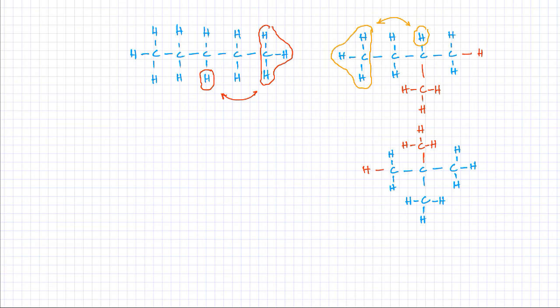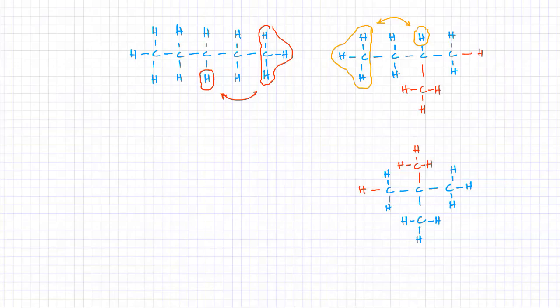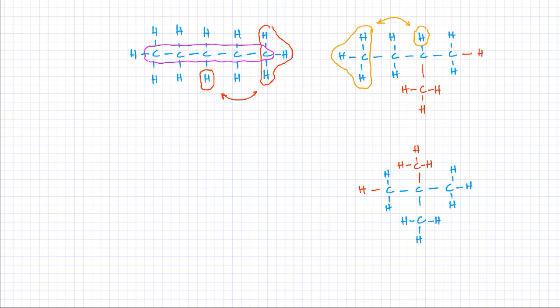So we've come up with three isomers of pentane — all of them are isomers of each other. What you'll notice is that all these isomers, although they have the same number of atoms and the same number of atoms of each element, the arrangement is different. Because they're different molecules, they're also going to have different names. The first one is simply pentane, because there are five carbon atoms in a row and it's an alkane.